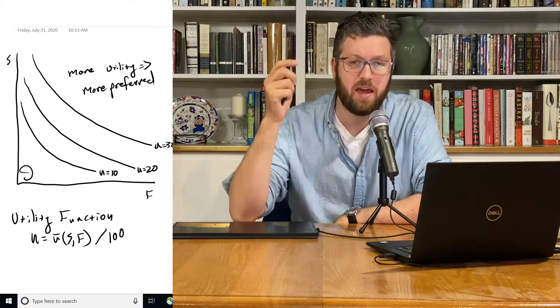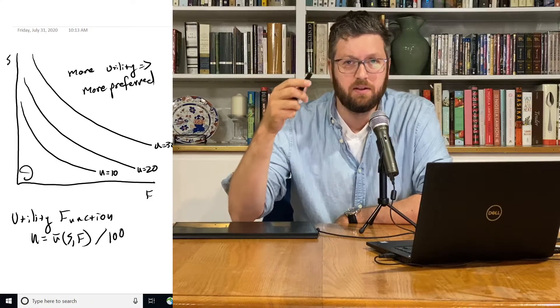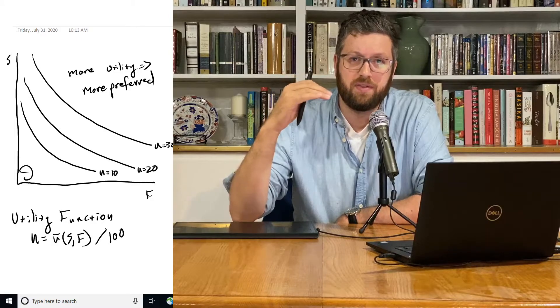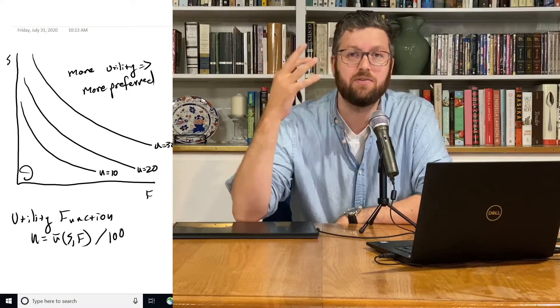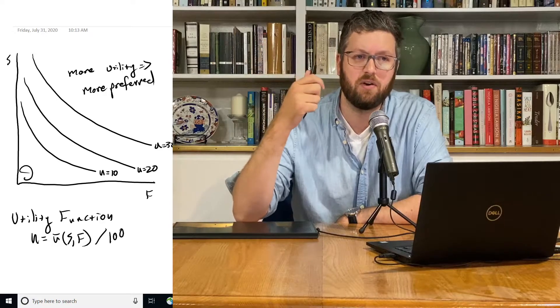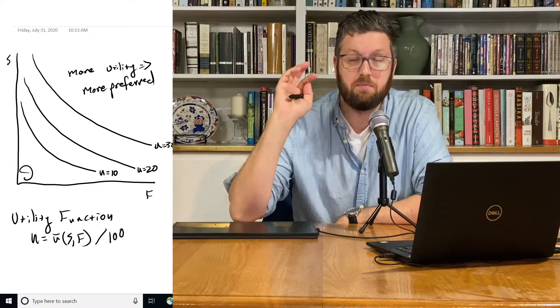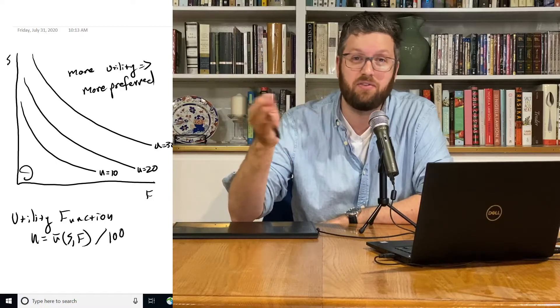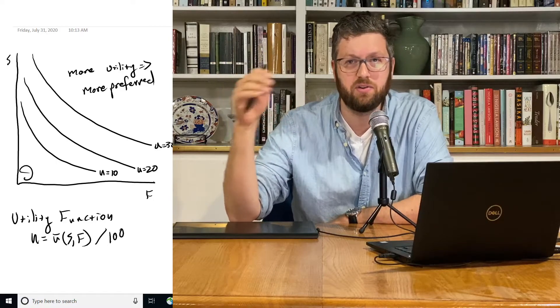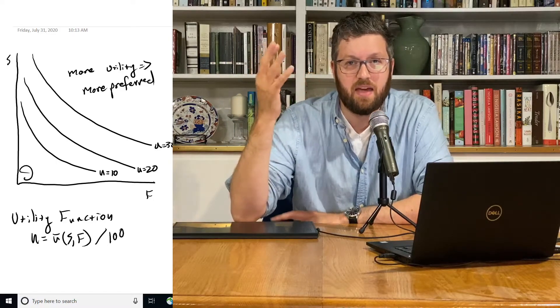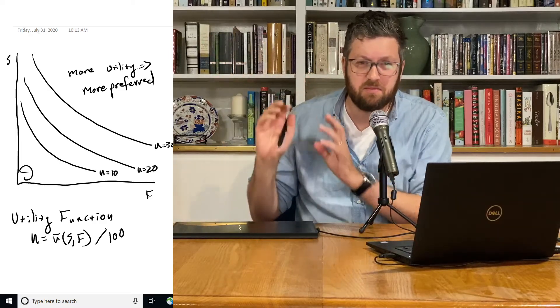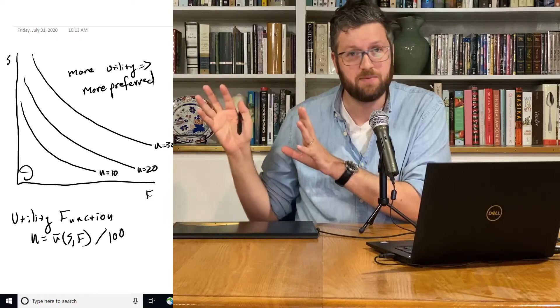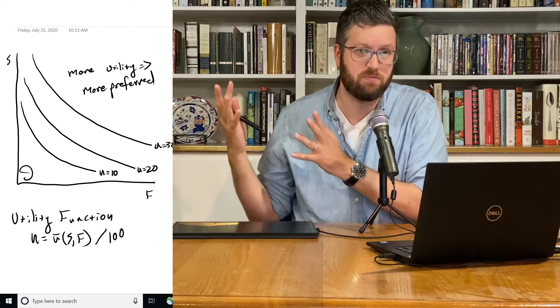Now, that all said, it is still true that things that we most prefer are going to get associated with a high utility number. So if something gives you utility of a million, and most everything else has a utility of one or two, then that means you most prefer the thing that has the utility million. It doesn't mean you are a million times as happy, but it means it's most preferred.